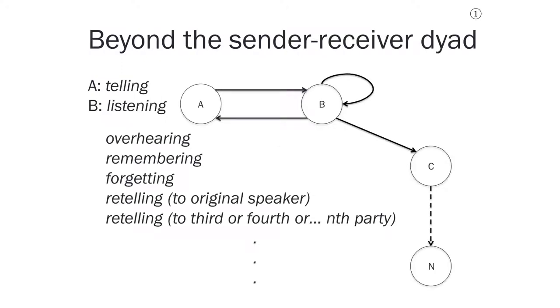But of course, telling and listening aren't the only things that can happen in communication. We can also overhear other people. We can remember what they said. We can forget what they said. We can retell what someone said back to them, saying something like, so what you're telling me is blah, blah, blah. And we can also retell what they said to some third party, who might tell it to some fourth party, who might tell it to some other party further down the line.